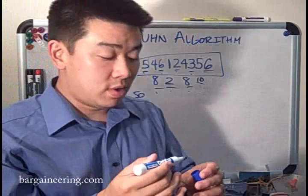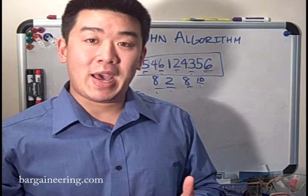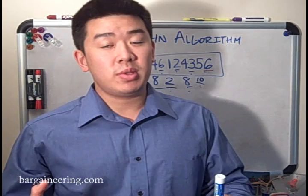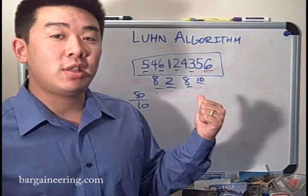50 divided by 10 is 5 with a remainder of 0. That means you know, at least according to the Lund algorithm — and hopefully I'm saying the man's name right — that this number at least passes that first perfunctory check. Of course you can still have errors beyond this. Everyone knows this algorithm, so just because it passes the Lund algorithm doesn't mean that it's a valid credit card.